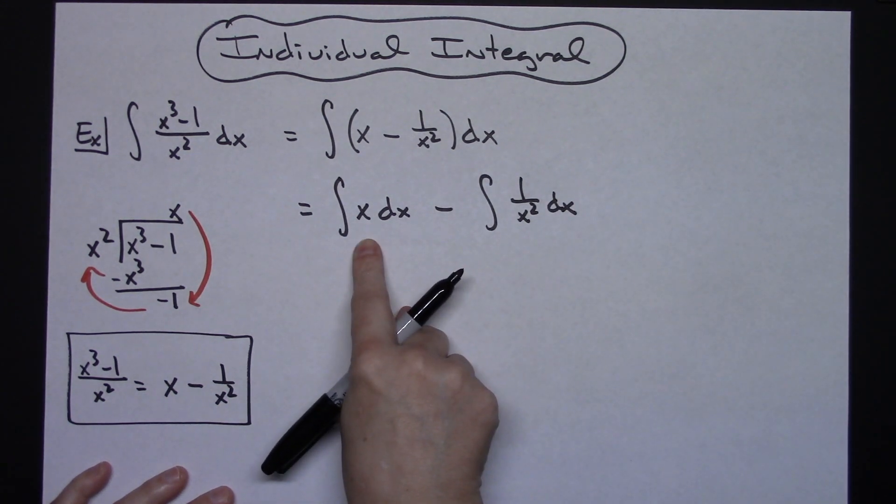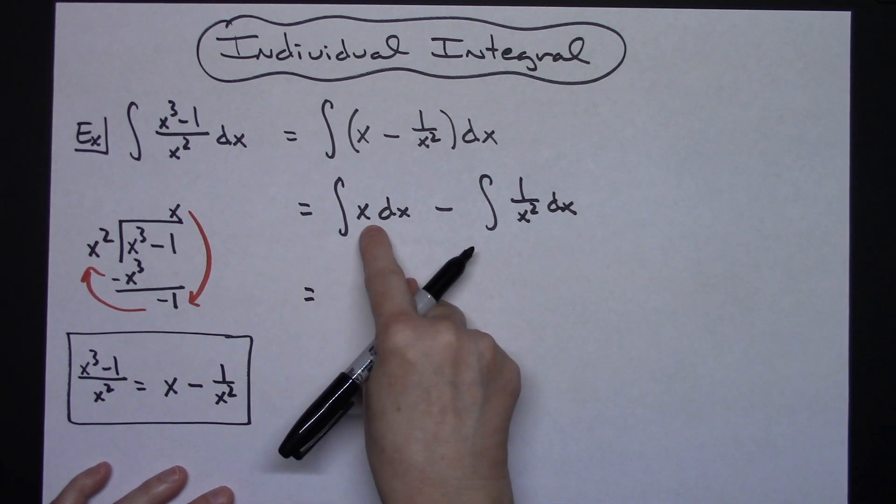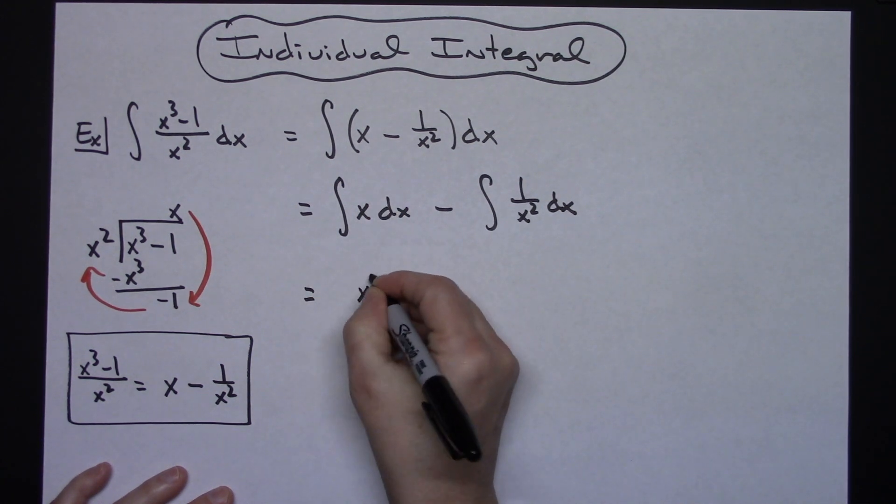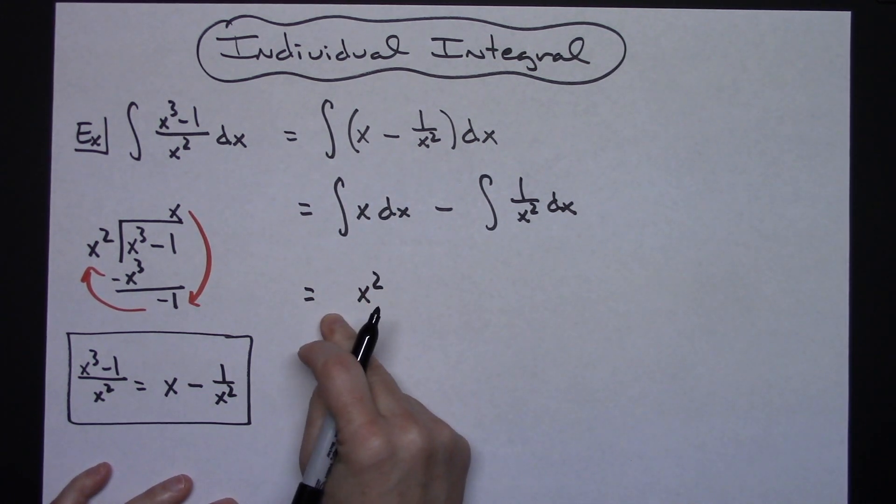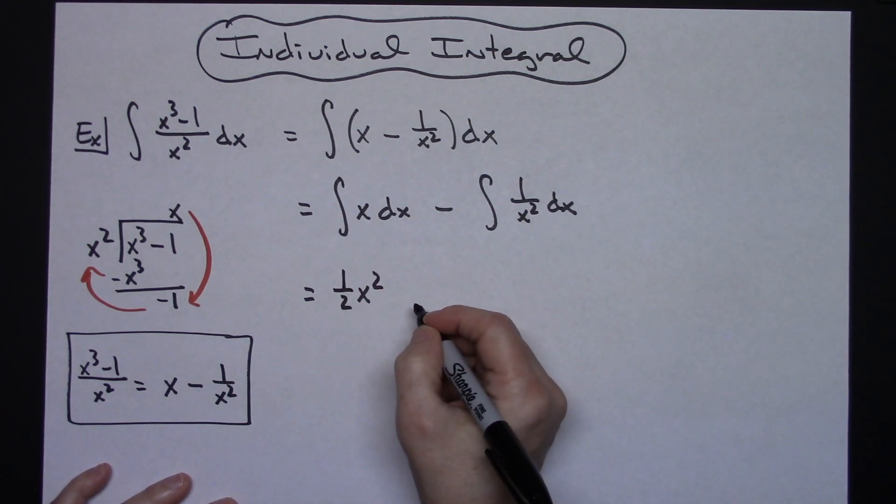This one I can integrate right away because it's just a plain x. Adding 1 to that exponent I'll have x squared. Putting it in front with the reciprocal I'll have 1 over 2.